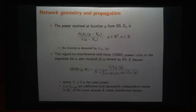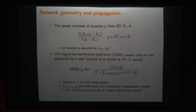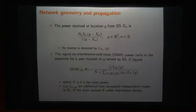The power received from base station X_n at location Y is the transmitted power multiplied by shadowing divided by the deterministic propagation loss. The inverse of this quantity is denoted by L. Within this model the SINR at location Y can be expressed as the received power divided by the sum of noise power N (a non-negative number) and interference, where the interference is weighted by factors phi_Y, which are also general marks modeling the activity of the base station.